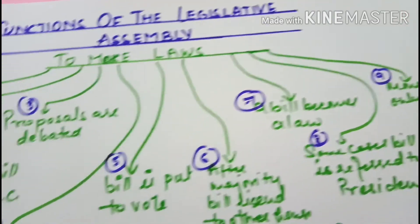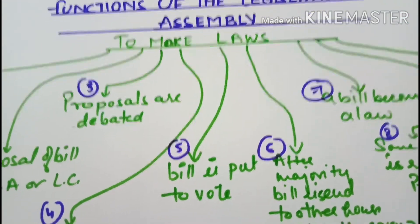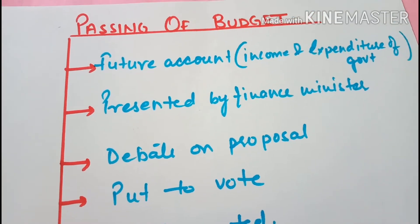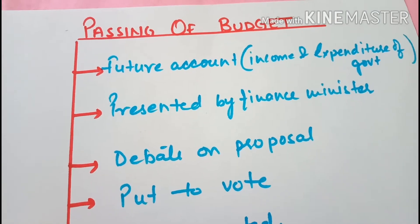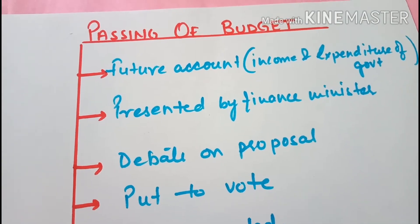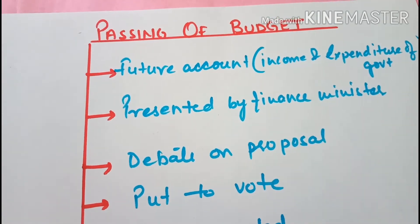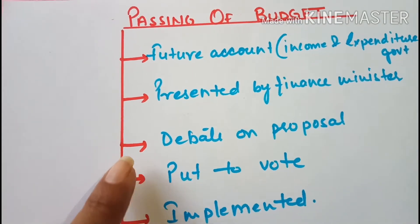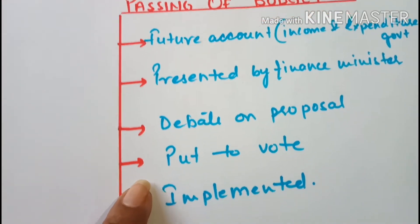So that was how the bill becomes law. Next is passing of budget. Budget is a future account which makes the present government tell the assembly of its expenditure and income. The finance minister announces this budget. Then there is debate on this budget and then it becomes implemented after getting the majority.